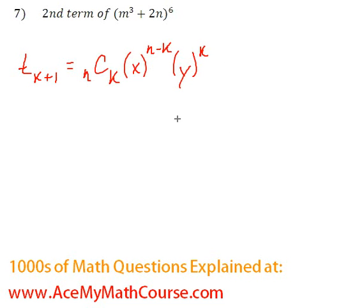Great, now we just need to plug everything in. We know we're looking for the second term, which means k+1 = 2. So k is just 1, since we can subtract 1 from both sides of the equation.